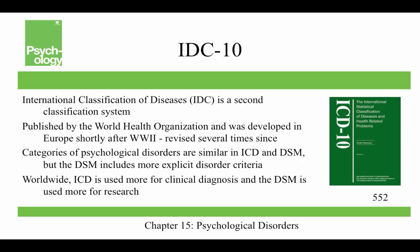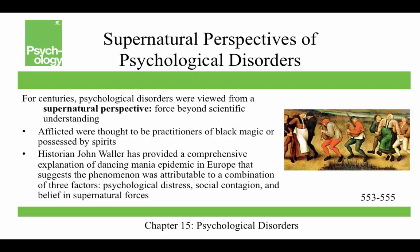The International Classification of Diseases, or ICD, is a second classification system published by the World Health Organization, and it's basically European. It's been revised approximately ten times. Categories of psychological disorders are similar in the DSM and the ICD, but the DSM contains more explicit disorder criteria. Worldwide, the ICD is used more for clinical diagnoses, and the DSM is used more for research.